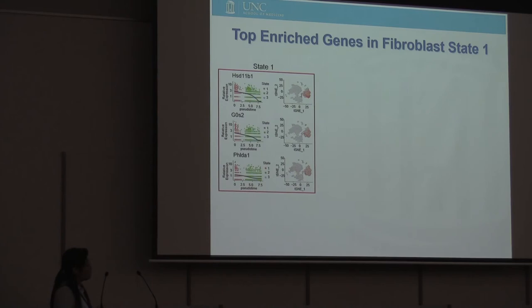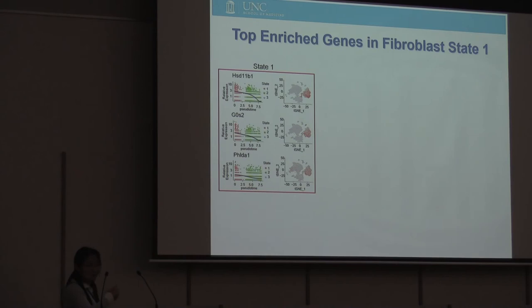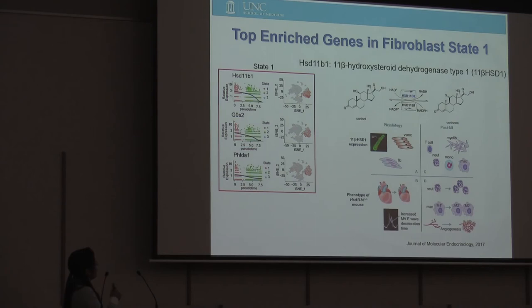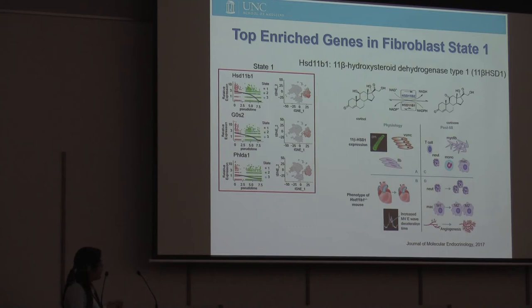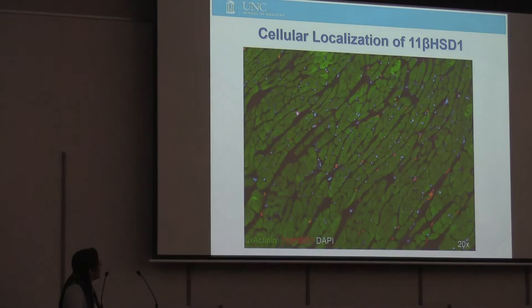We went back to the data and looked at fibroblast state one. Using the pseudo-time trajectory toolkit analysis, we found the top-enriched gene uniquely expressed in this state. Those genes are not very familiar. The top-enriched gene is HSD11B1 — a gene barely studied in the cardiac field. A review paper we found from the Journal of Molecular Endocrinology showed people outside our field did a very preliminary study claiming this gene is expressed in all major cell types of the heart, mostly enriched in fibroblasts, and is mainly involved in immune response and angiogenesis. Knockout mice have a slightly smaller heart. So we decided to really look at what happens.